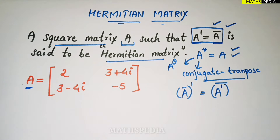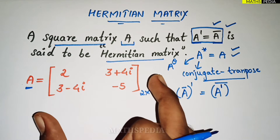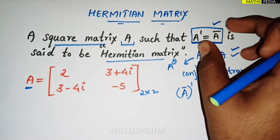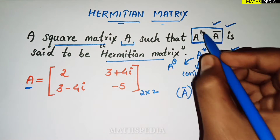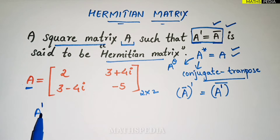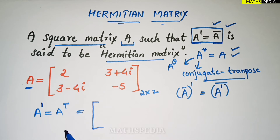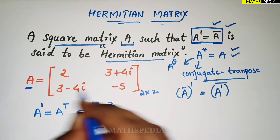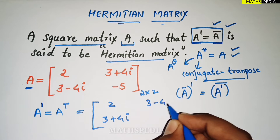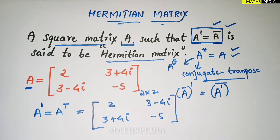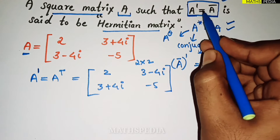Here we have a 2×2 matrix A. We have to check whether it is a Hermitian matrix by verifying the two conditions. First, we find A transpose by changing rows with columns. The first row becomes the first column: 2, 3+4i. The second row becomes the second column: 3−4i, −5. This is the transpose of matrix A.